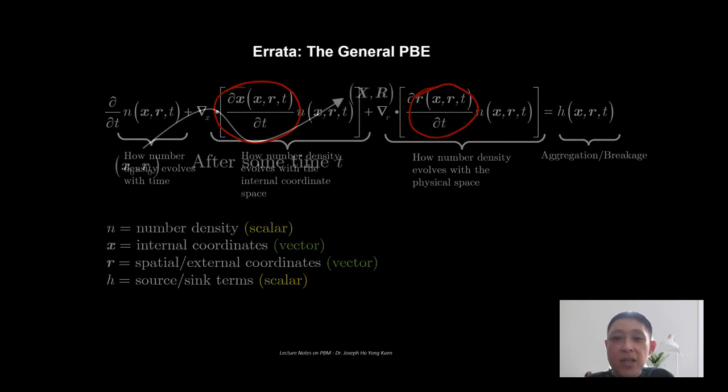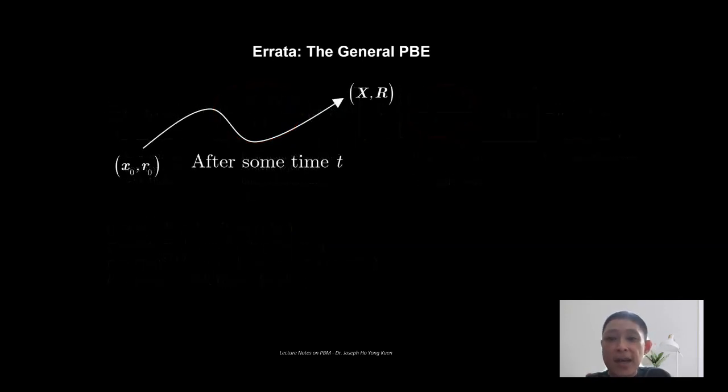Let us imagine that we have a particle that is initially at a particle state of x naught and r naught. x naught being the initial state in the internal coordinate space, whereas r naught is the initial state at the external coordinate space, which means the physical space.